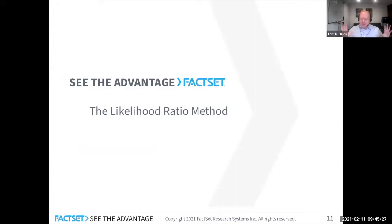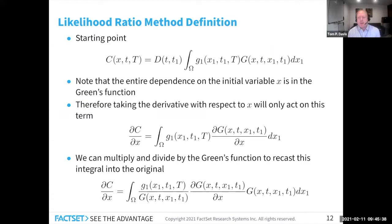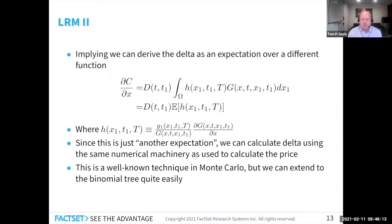We have the setup we need: we've talked about how to discretize time, and for log-normal processes how to discretize space. So what does the likelihood ratio method have to do with this? We start again with this convolution giving the price today based on the price function at time T₁. The trick of the likelihood ratio method is that the initial variable only appears in the transition density function — the Green's function. Therefore, taking the derivative of both sides, the derivative on the right-hand side only acts on the Green's function. If you multiply and divide by the Green's function again, you have something that looks like an expectation value, but over a different quantity. Defining that quantity H, it's just another expectation — and that's the well-known likelihood ratio method.